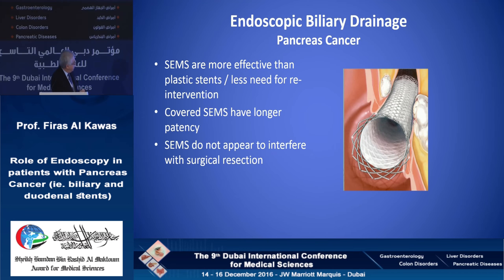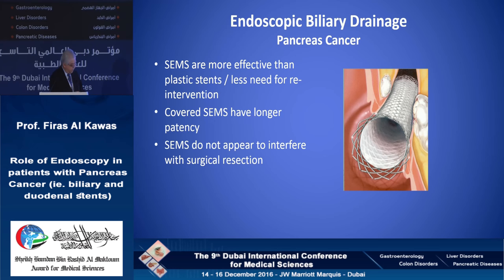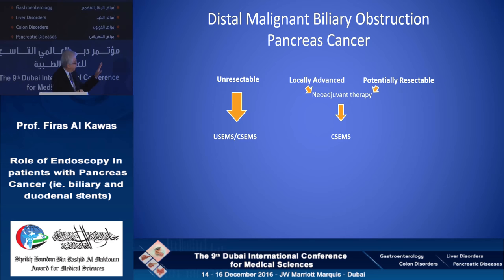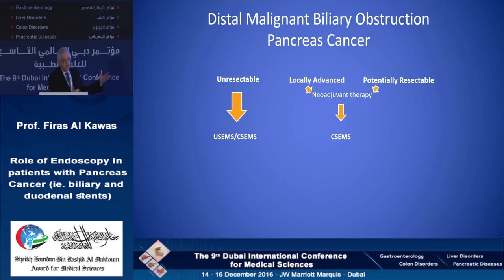In conclusion for self-expandable metal stents: they are much more effective than plastic stents, have longer patency, and do not interfere with surgical resectability. For patients with unresectable disease, we recommend self-expandable metal stents, either uncovered or covered. For those who are locally advanced or potentially resectable and will receive neoadjuvant therapy, a covered self-expandable metal stent is usually recommended. The covered ones can be removed if needed.